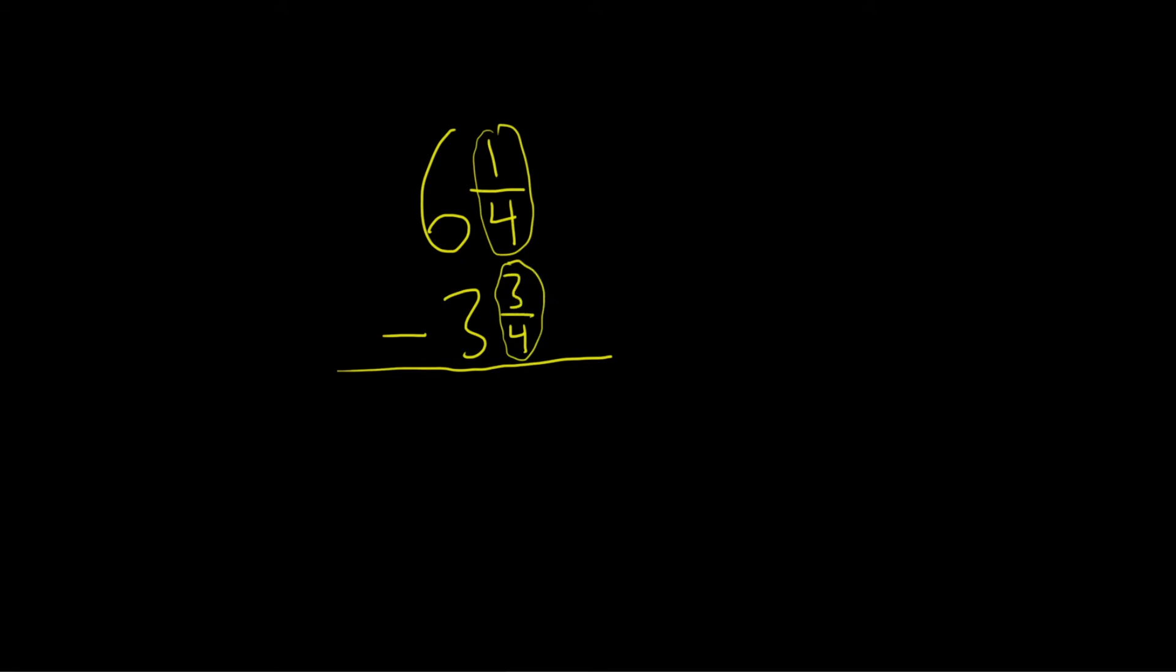So what we have to do in this problem is start by rewriting our top number. If we have 6 and 1 fourth, what we want to do is borrow one of the whole numbers and add it to the fraction. So we can write this as 5 plus 1 and 1 fourth.